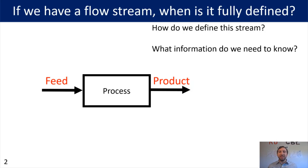We've talked about this process unit, we talked about these feed and these product streams. The next question you're probably going to be wondering is: if we have one of these flow streams, when is it fully defined? How do we define the stream? What information do we need to know? In order to answer these questions, that's where the degree of freedom analysis is going to come in.